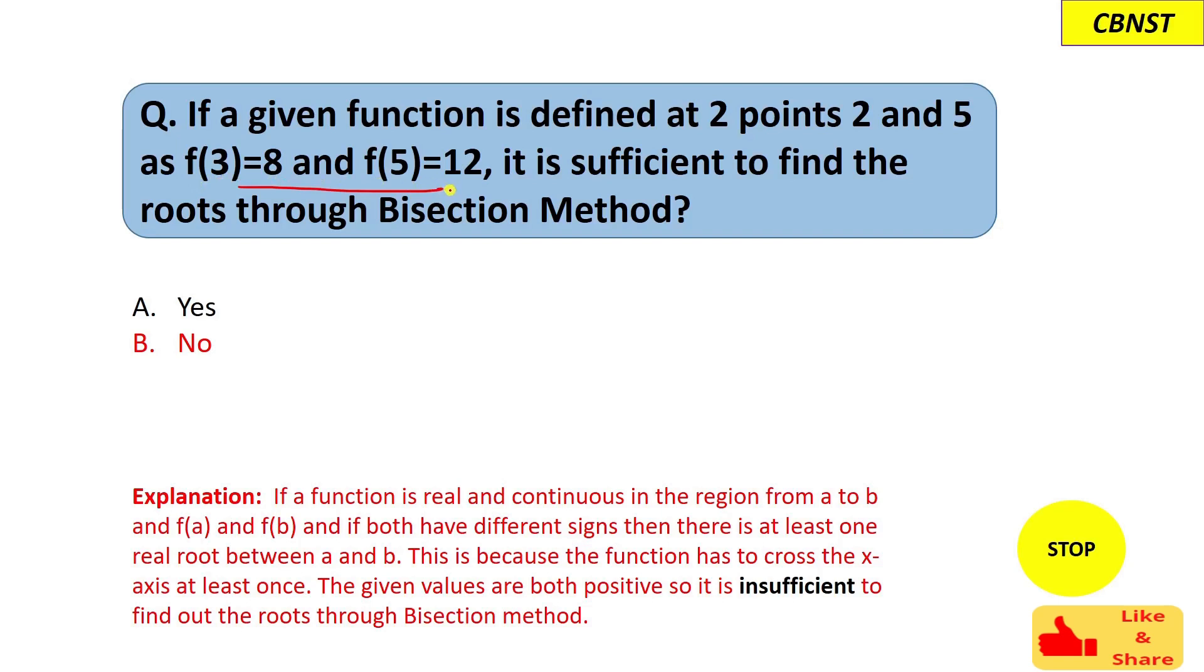As we have seen in the previous video, bisection method works on the intermediate value theorem. The intermediate value theorem says if we have function f and we have two points a and b such that the function value at these two points f(a) and f(b)...